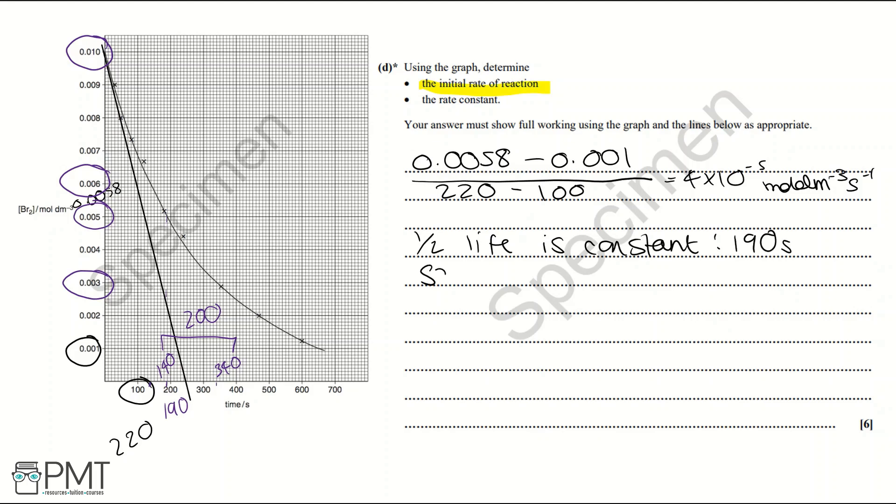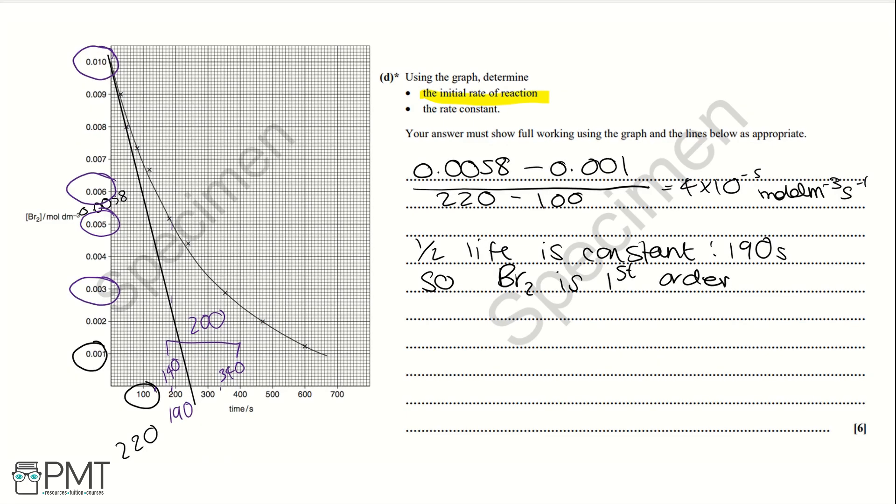Therefore, if we have a constant half-life, that means the rate of reaction with respect to bromine is first order. So we would then also write this on the lines provided. The reason that a first order reaction has a constant half-life is because a first order reaction is determined exclusively by the rate constant. So therefore, half-life will be constant.